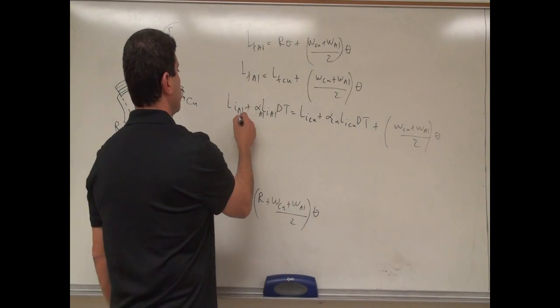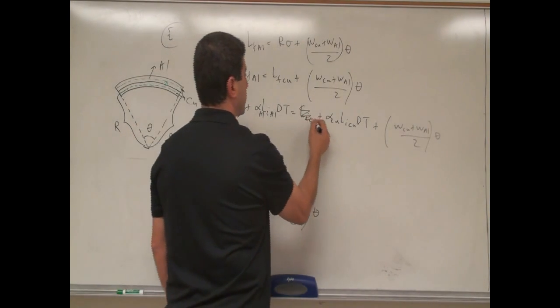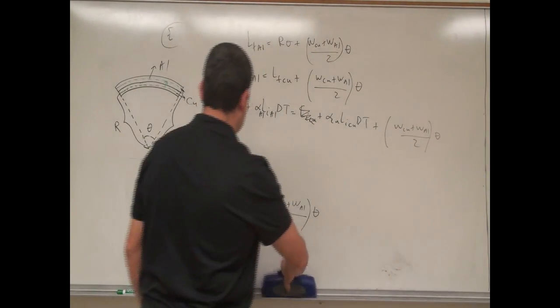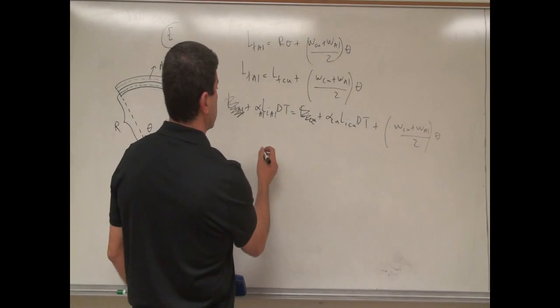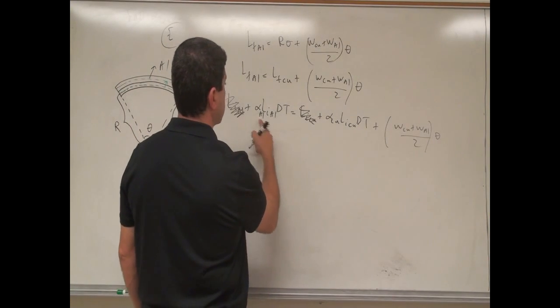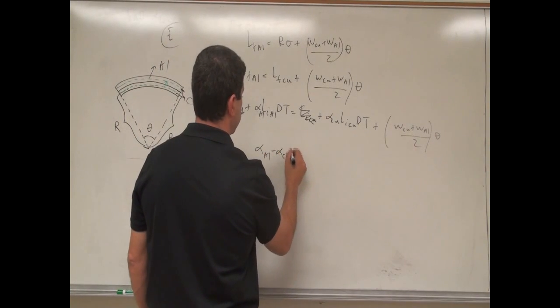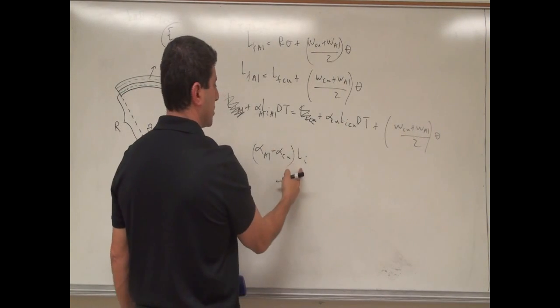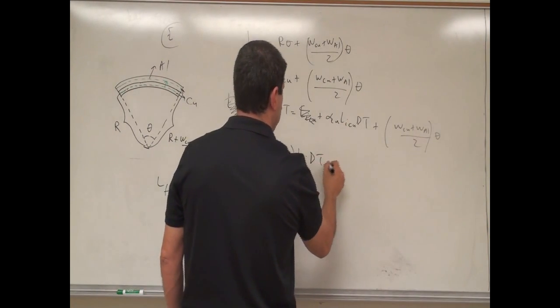So then what's going to happen, the l-initial aluminum and the l-initial copper are actually the same, and then we can combine this, so we get alpha aluminum, then I'm going to subtract alpha copper from there, then you have l-initial, since the l-initial is the same, we can just write it as l-initial, delta t.